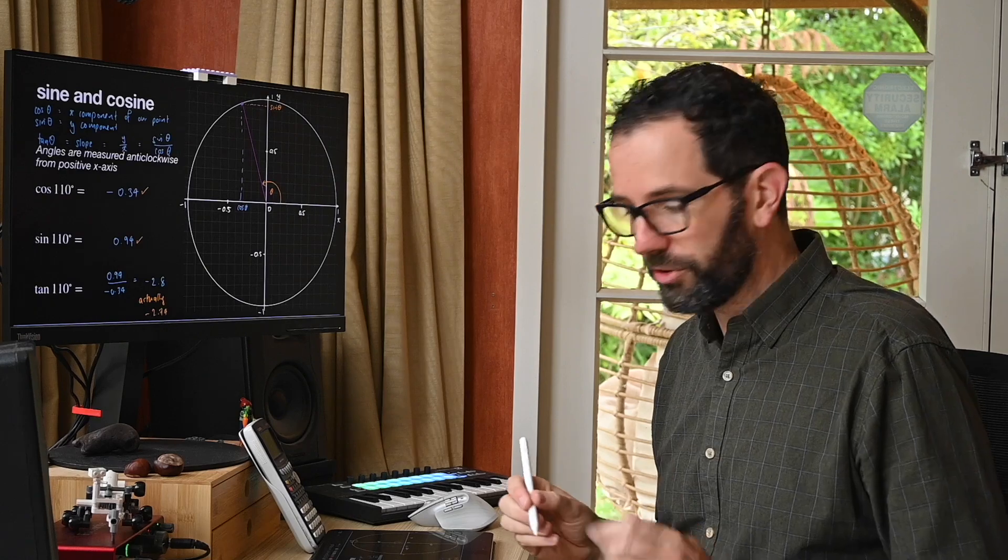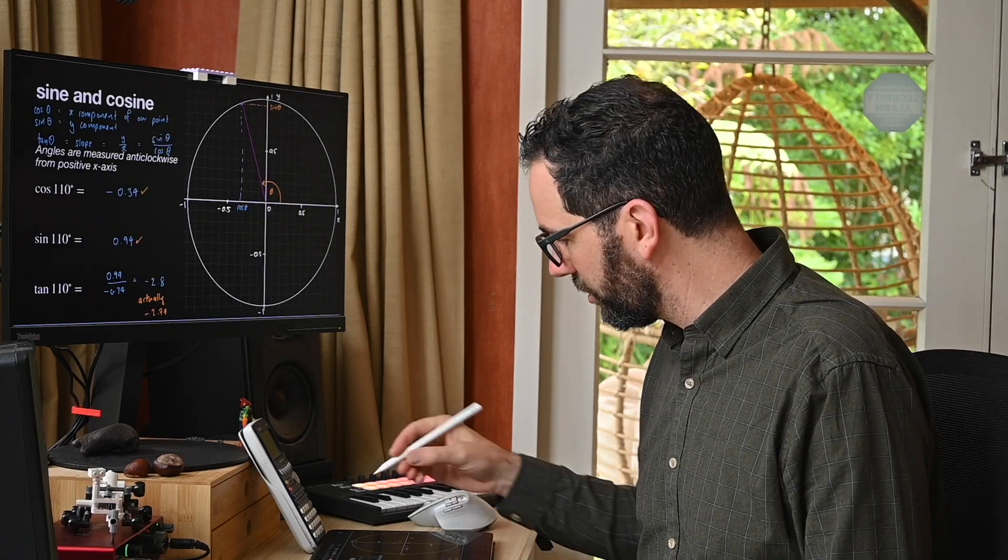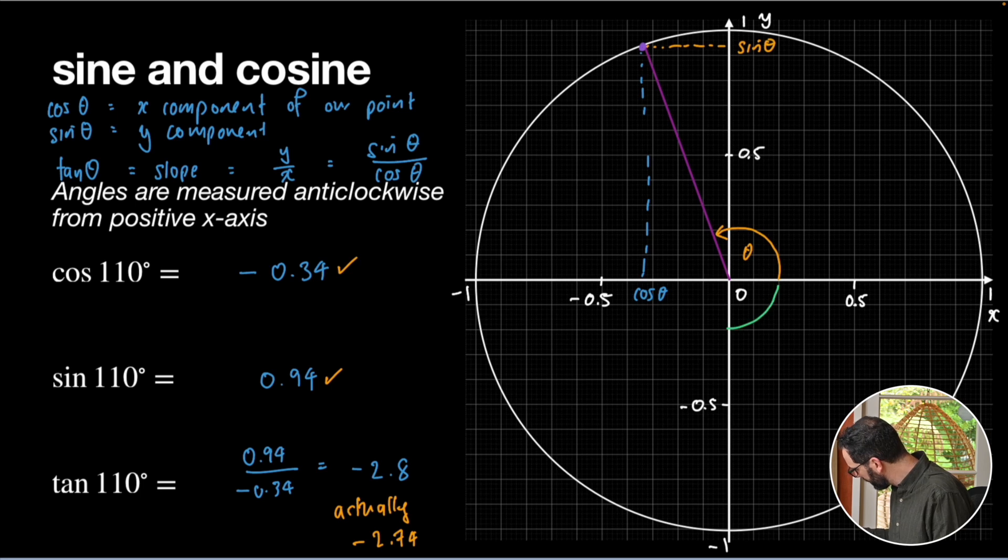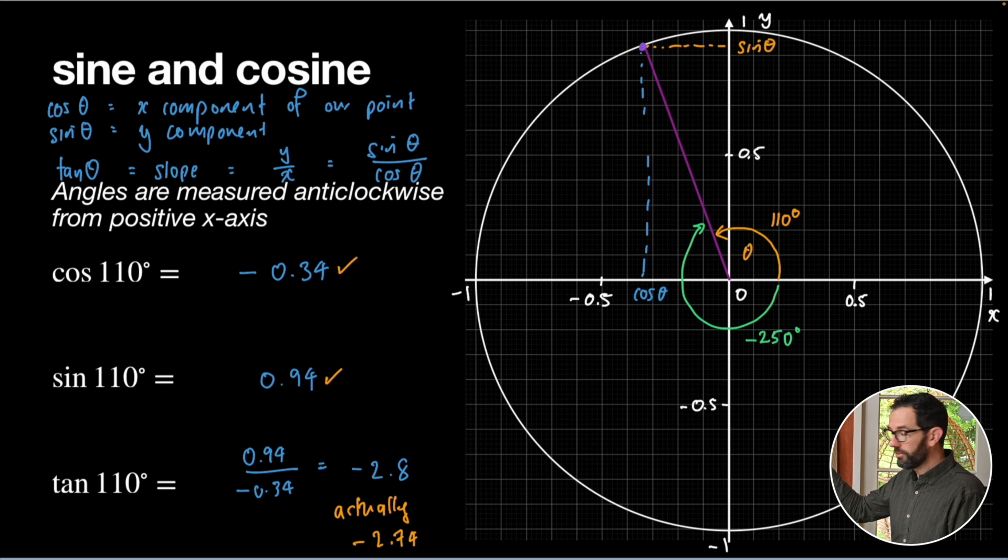Now, before we move on, it's also worth pointing out that we don't necessarily always go anticlockwise. If we go the other way, so we know that the orange angle is 110 degrees, we can also specify angles as being negative. And a negative angle just means go clockwise from the x-axis instead of anticlockwise. So, given that there are 360 degrees in a circle, that means this angle would be negative 250 degrees, and that's the same angle as far as cosine and sine and things are concerned. If I were to put cosine of negative 250 degrees into my calculator, I'll get exactly the same thing as cosine of 110 degrees. Okay, so think of negative angles as just rotating the opposite direction, positive angles anticlockwise, negative clockwise.